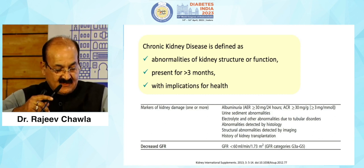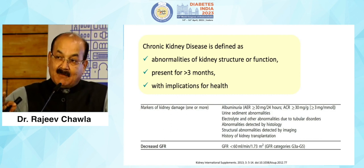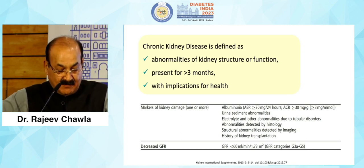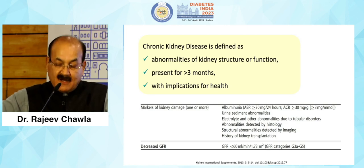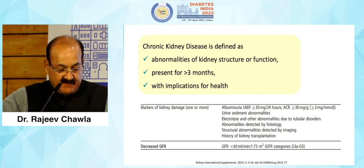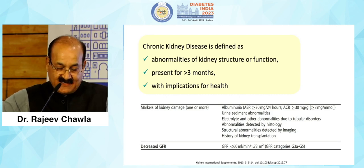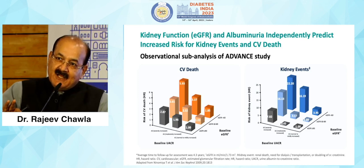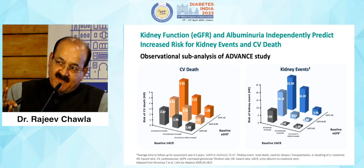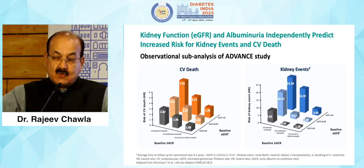Markers of kidney damage include albuminuria — anything more than 30 up to 300 milligram or gross proteinuria. Urine sediments are very important. Any electrolyte and other abnormalities which happen because of tubular disorders, or if detected by histopathology, imaging such as ultrasound, history of kidney transplantation, and reduction in eGFR less than 60 — all count. I must tell you why we are taking albuminuria more than 30 and eGFR less than 60 as significant cutoffs in clinical practice.